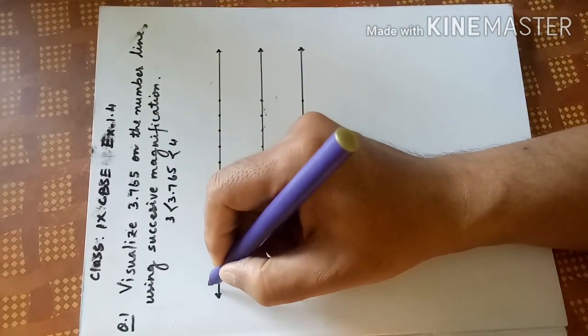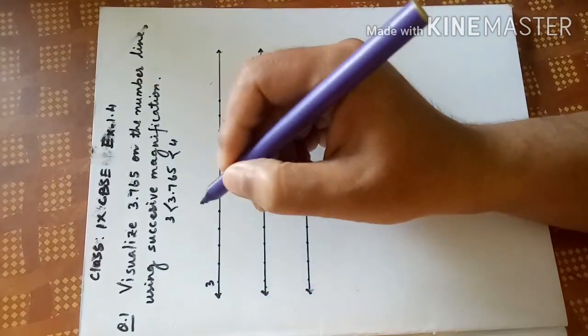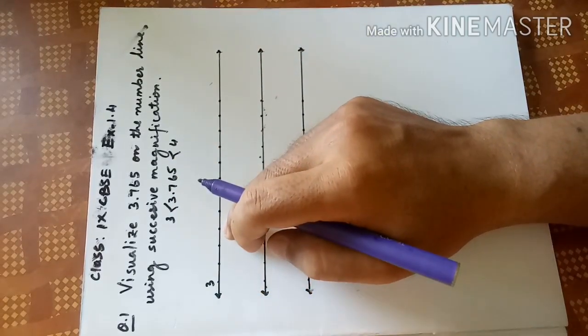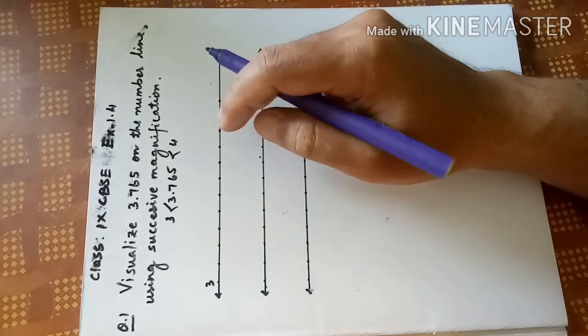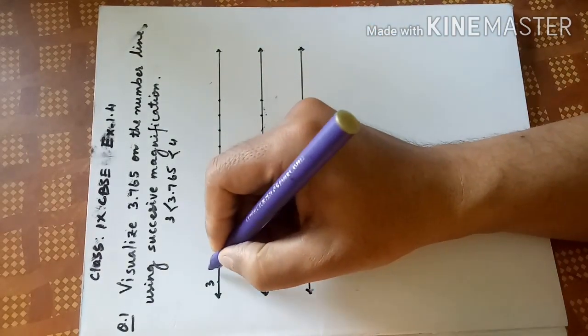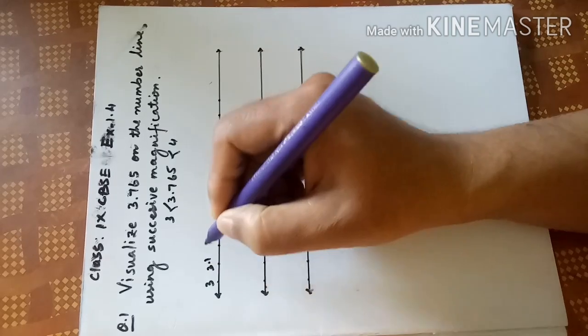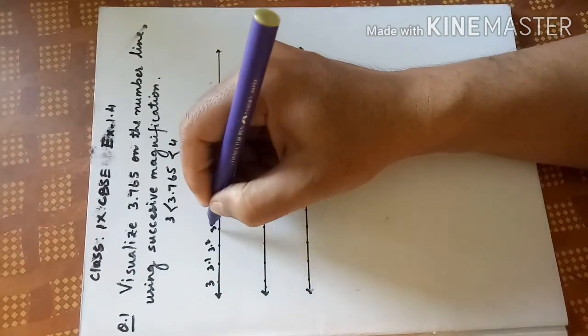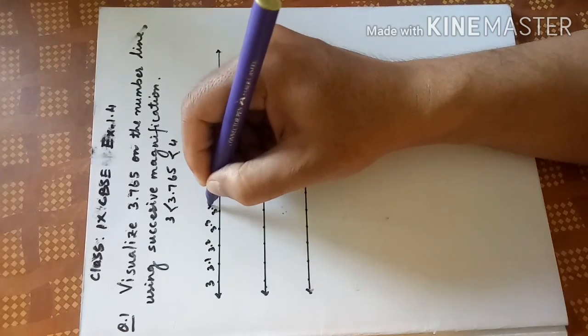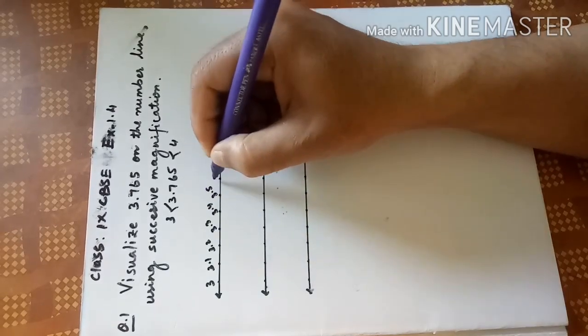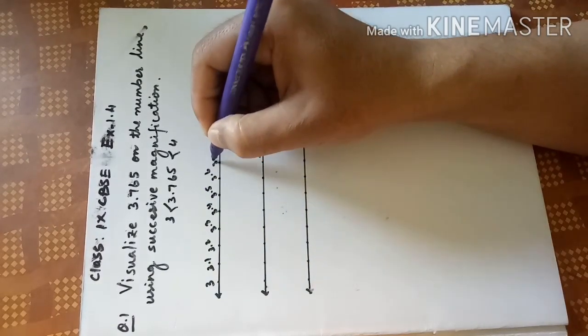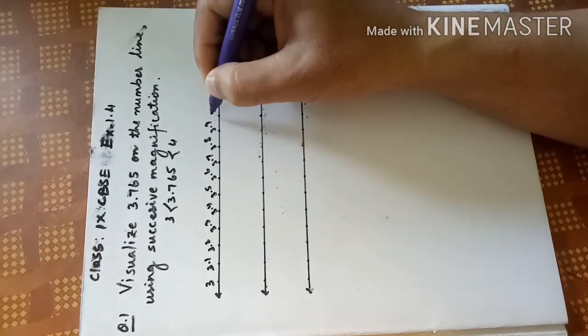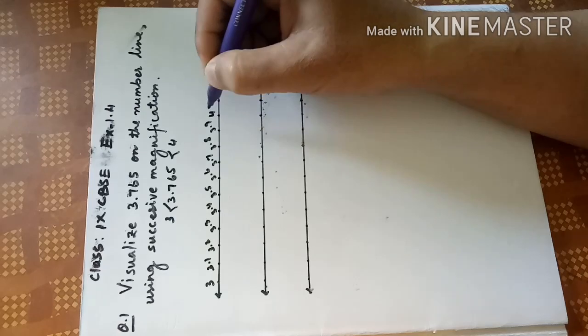You start from 3 and like 3.1, 3.2, 3.3, 3.4, like that go on up to 4. So 3.1, 3.2, 3.3, 3.4, 3.5, 3.6, 3.7, 3.8, 3.9, then it will come 4. Just after the point, the digit is 7.